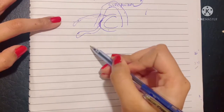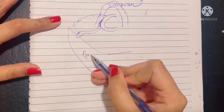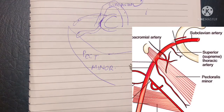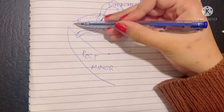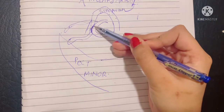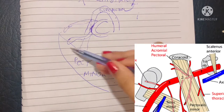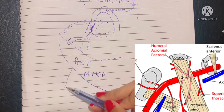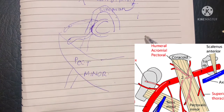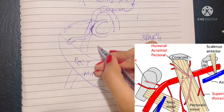The axillary artery then encounters a very important muscle called the pectoralis minor muscle. This muscle arises from the third, fourth, and fifth ribs and inserts into the coracoid process of the scapula. As the axillary artery passes through the axillary canal, this muscle divides it into three parts — never forget this muscle.